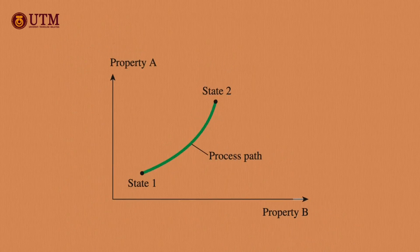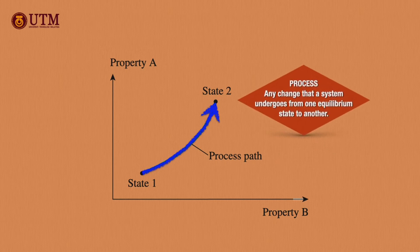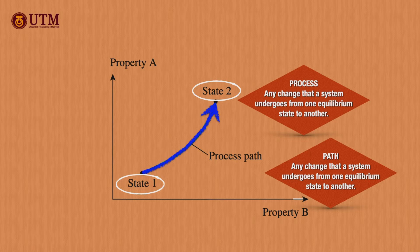Any change that a system undergoes from one equilibrium state to another is called a process. To describe a process thoroughly, one should specify the initial and final states of the process, the path it follows, and the interactions with the surroundings as well.